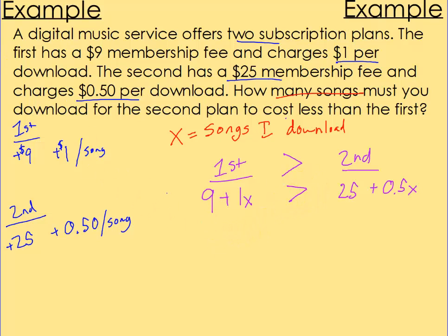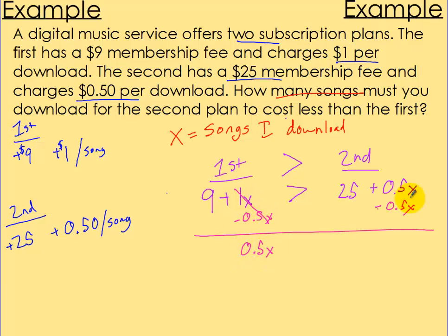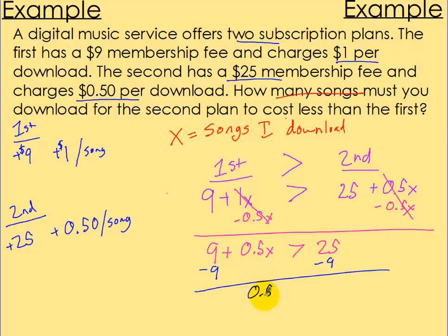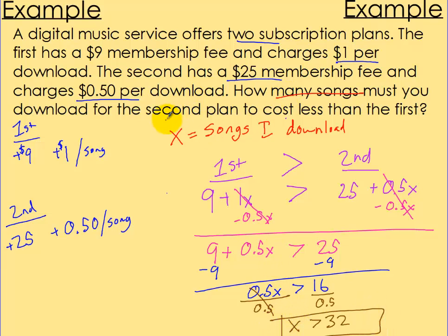Solving: subtract 0.5x on both sides. I'm left with 9 + 0.5x > 25. Subtract 9 on both sides: 0.5x > 16. Divide by 0.5 — which is the same as multiplying by 2 — and x > 32. So you must download more than 32 songs for the second plan to cost less than the first.